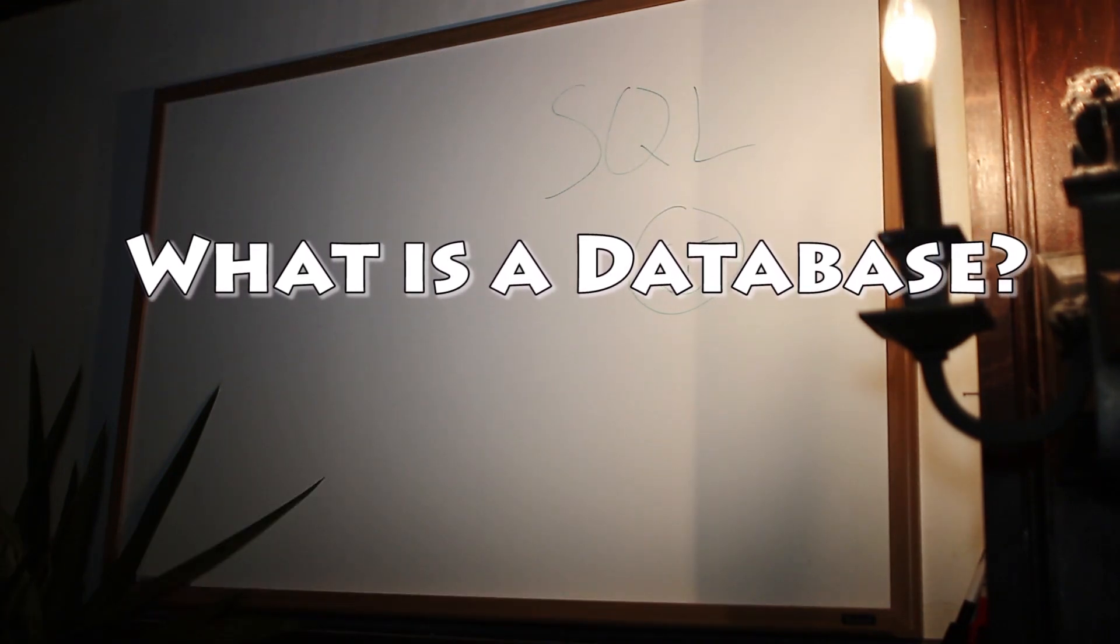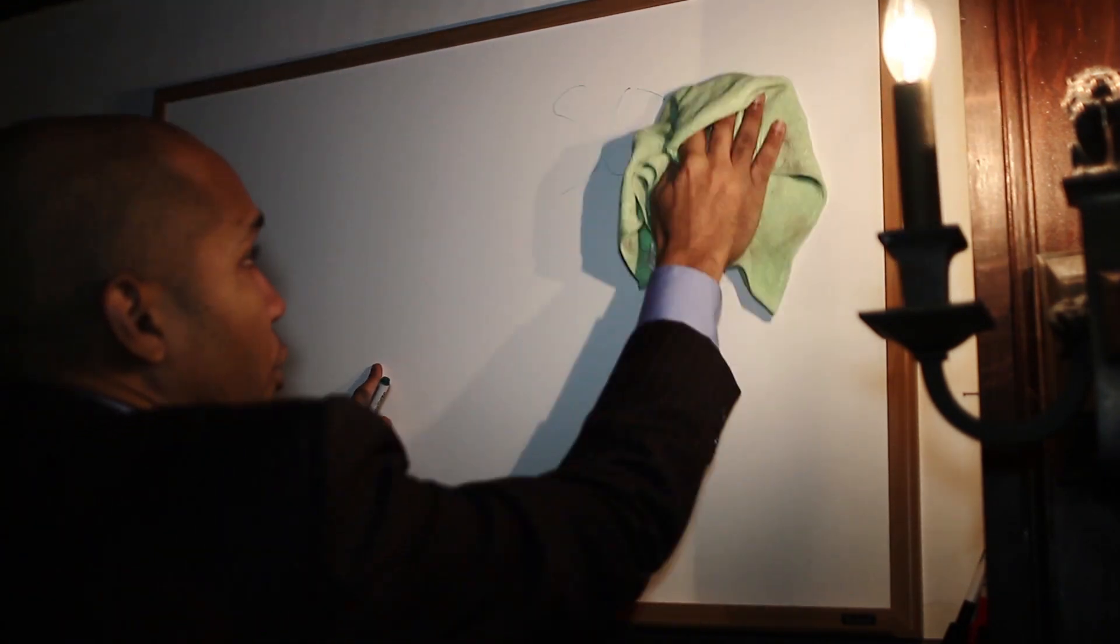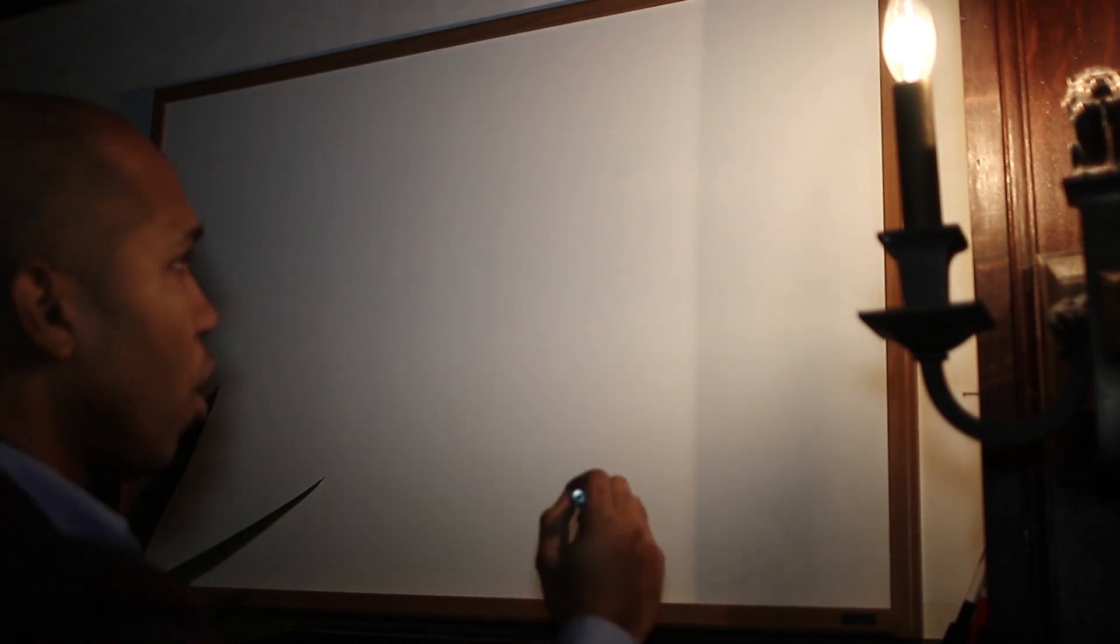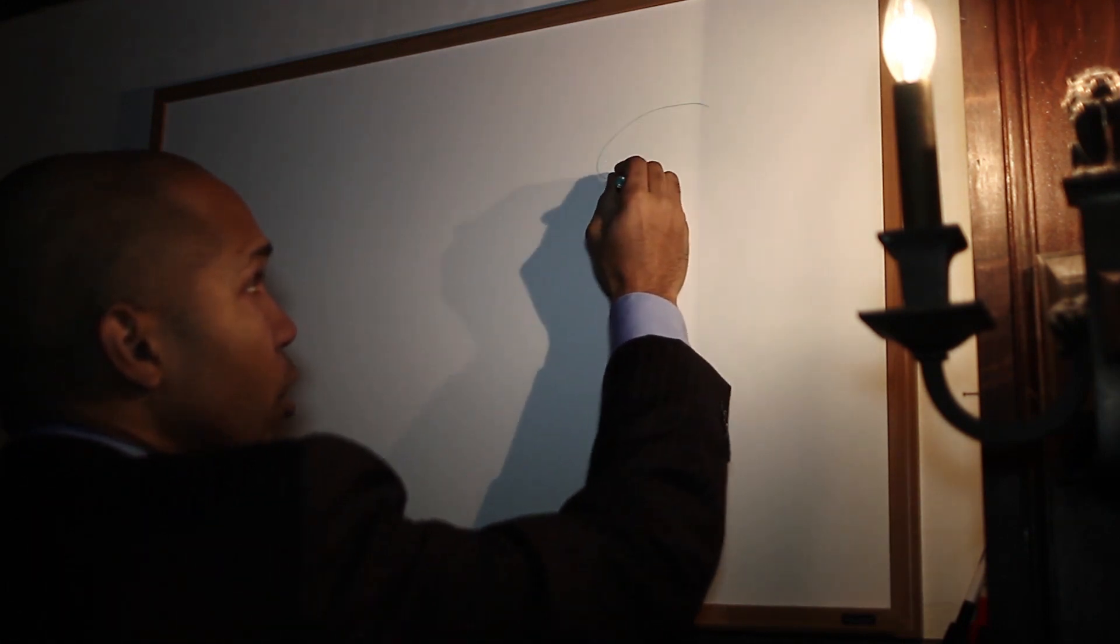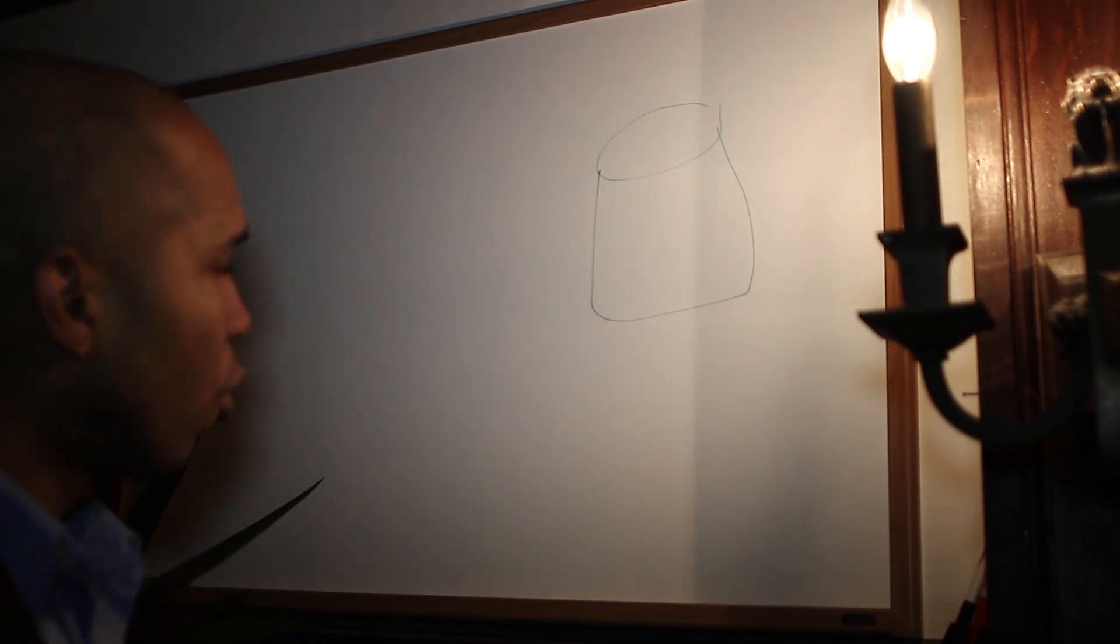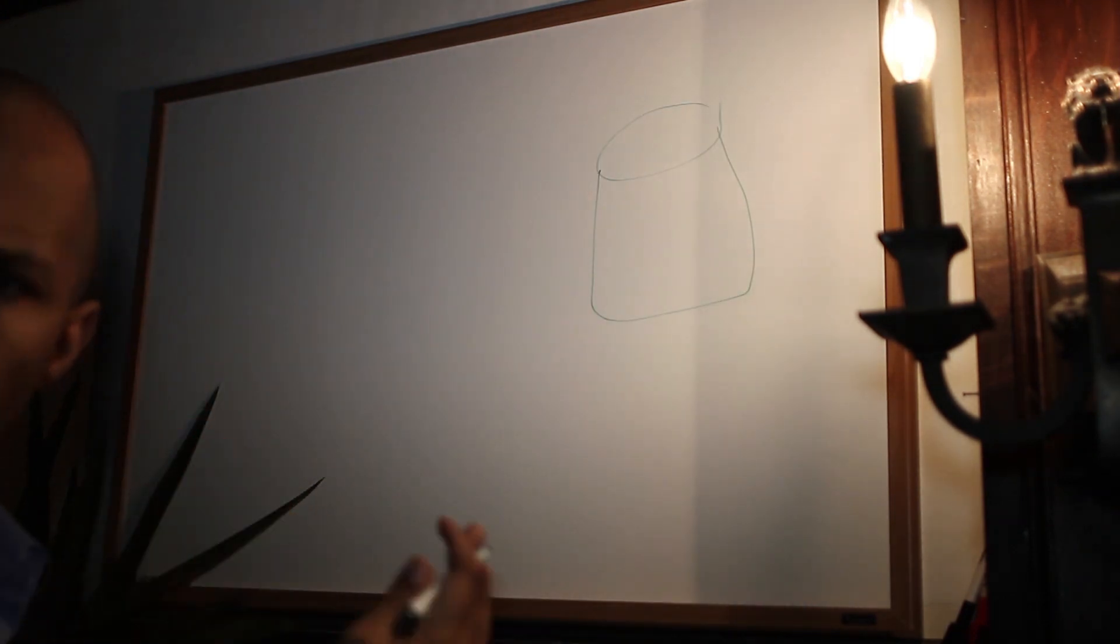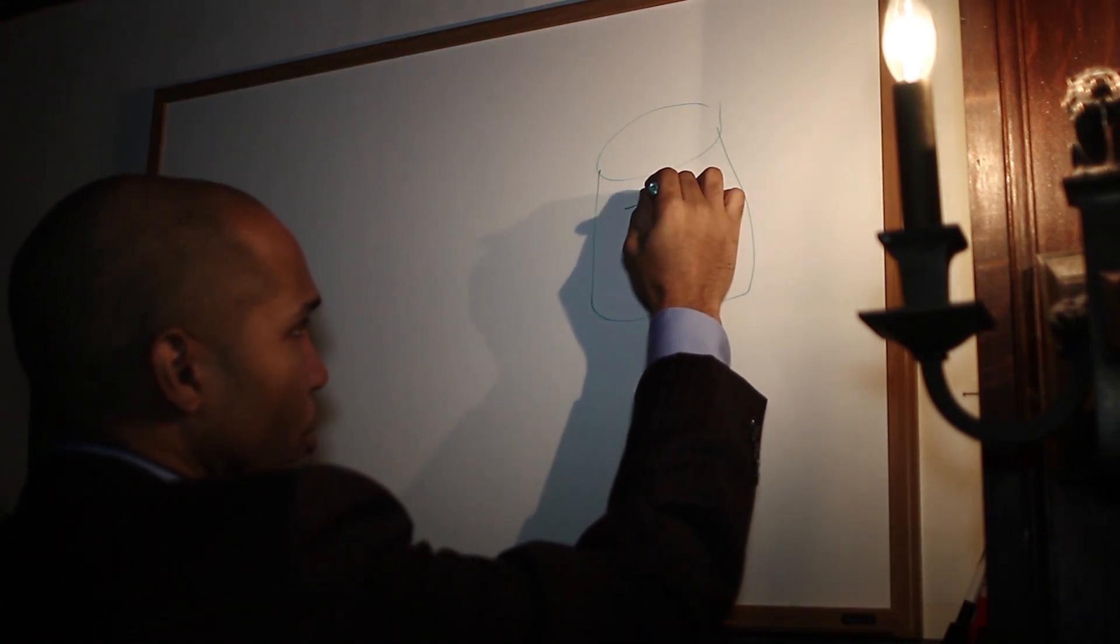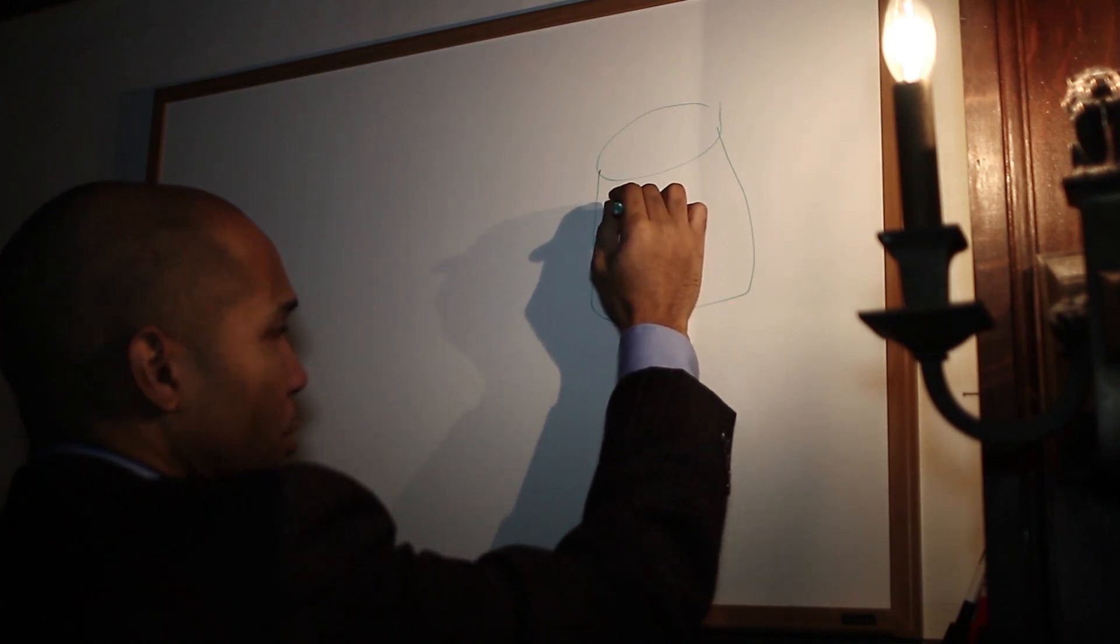So let's just go ahead and get this off of the board so we can talk about a database. A database is a base of data. This is where you store your data, you store information. So we'll just go ahead and draw a little diagram here, a visual representation of a database. So database, it's where you store your data. And you store the data in what we call tables.